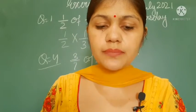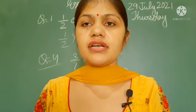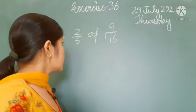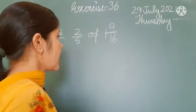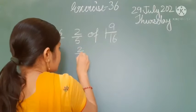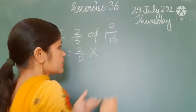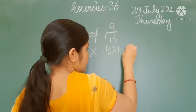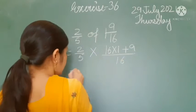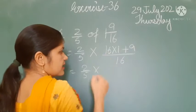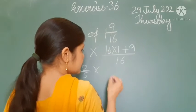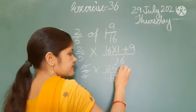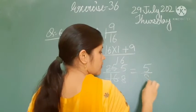Question number 6: 2 by 5 of 1 and 9 by 16. 'Of' means multiplication, and we change the mixed fraction into an improper fraction: 16 × 1 + 9 upon 16 gives 25 by 16. So we have 2 by 5 multiplied by 25 by 16. 2 eights are 16 and 5 fives are 25 — the answer is 5 upon 8.